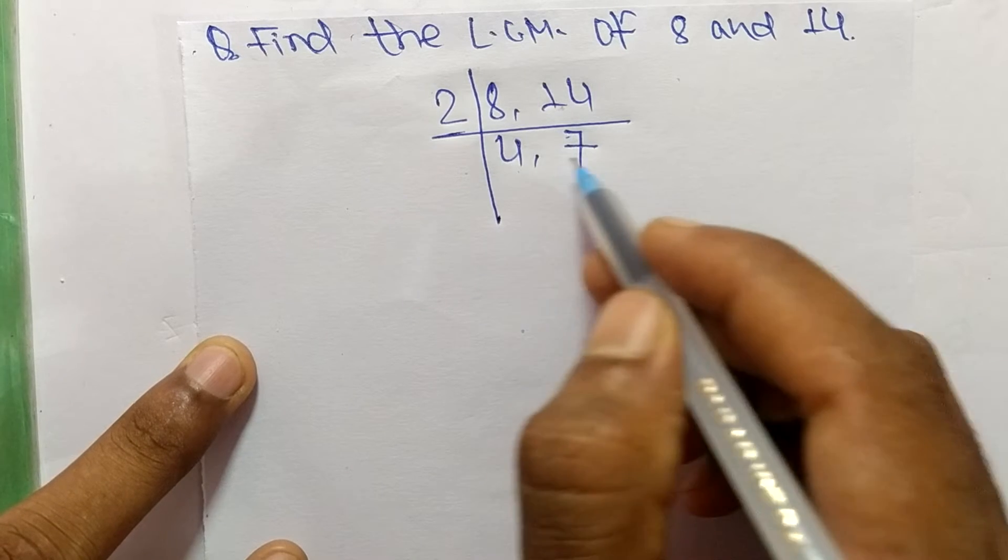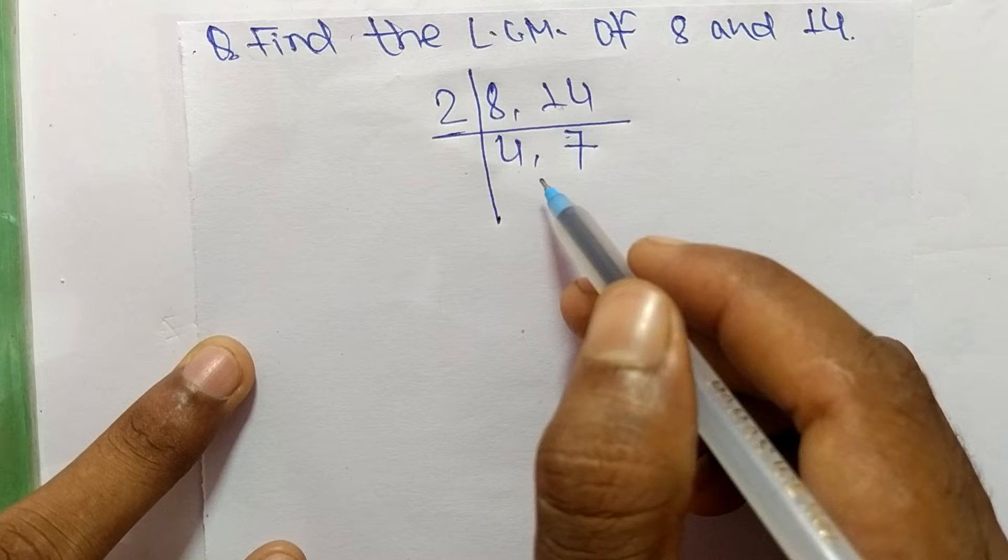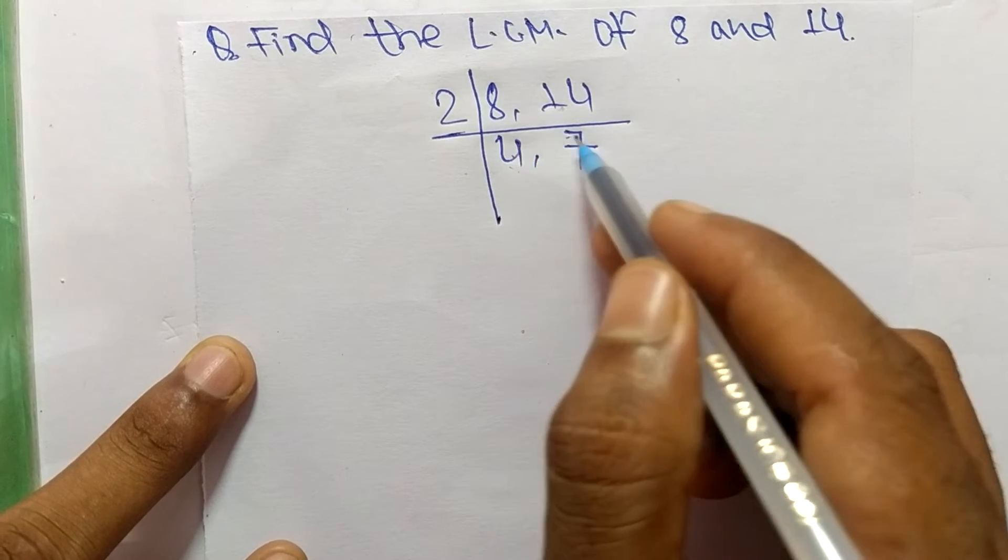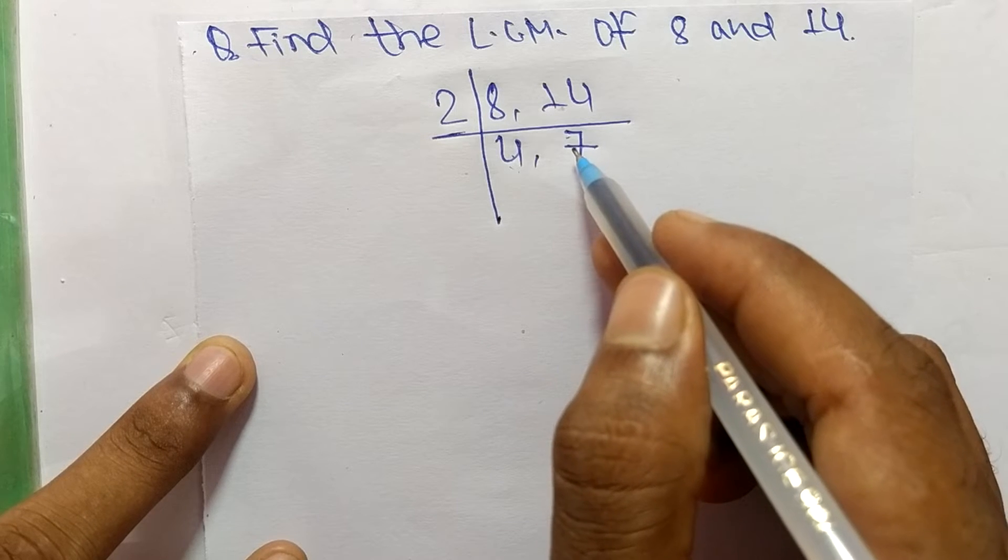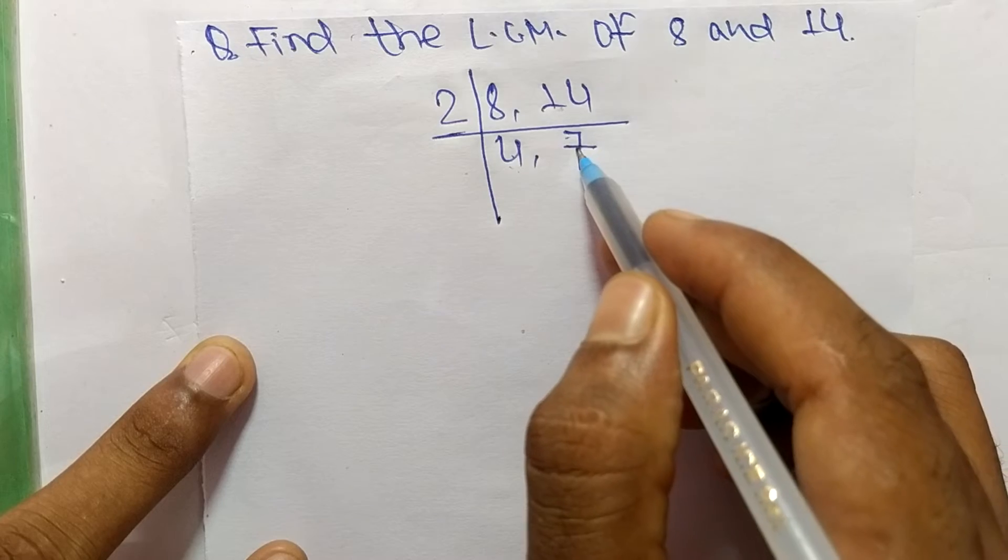If we take 2, then 2 can divide exactly 4 but can't divide 7. Likewise, when we take 7, then 7 can exactly divide 7 but can't divide 4.